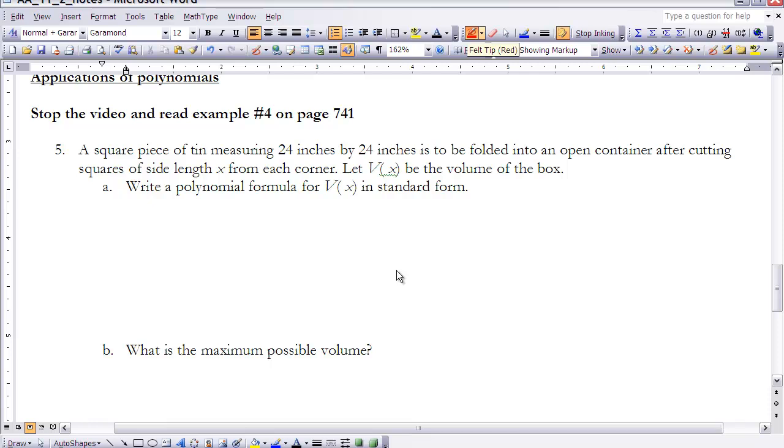Let's take a look at this last example. It says a square piece of tin measuring 24 inches by 24 inches is to be folded into an open container after cutting squares of side length x from each corner. Let V(x) be the volume of the box, write a polynomial formula for the volume in terms of x in standard form. So let's draw a picture of what we have going on here. So if that's the case, I have this box. It's 24 by 24. This is my tin. And I'm going to cut the corners out so that each corner is x by x.